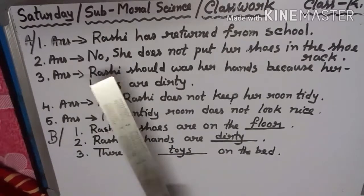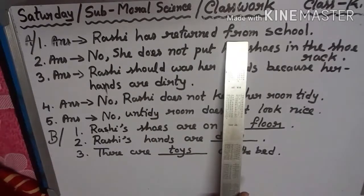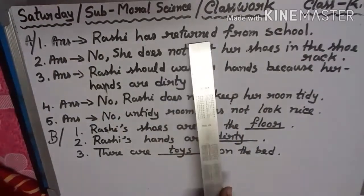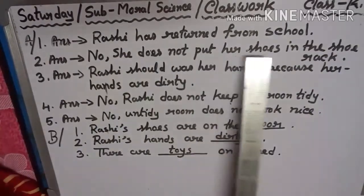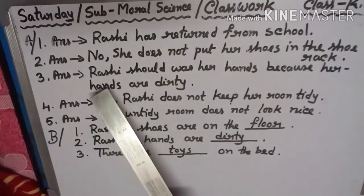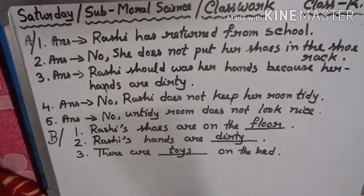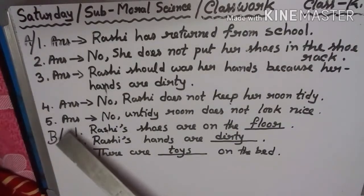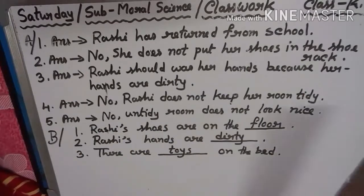Let's repeat again. Where has Rasi just returned from? Rasi has returned from school. Does she put her shoes in the shoe rack? No, she does not put her shoes in the shoe rack. Why should Rasi wash her hands? Rasi should wash her hands because her hands are dirty. Does Rasi keep her room tidy? No, Rasi does not keep her room tidy. Does an untidy room look nice? No, an untidy room does not look nice.